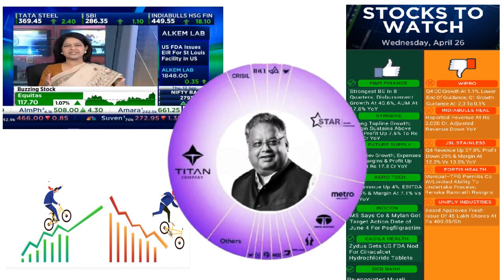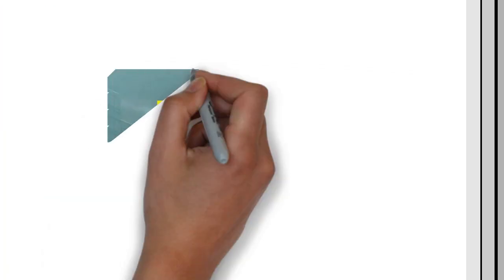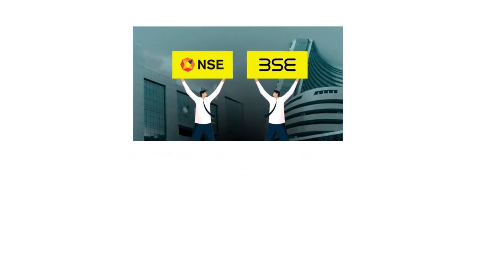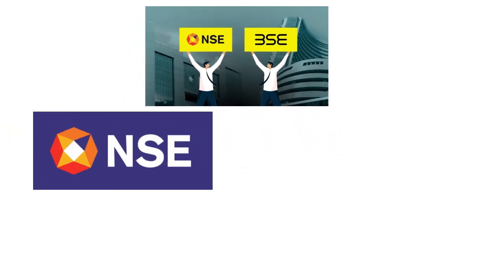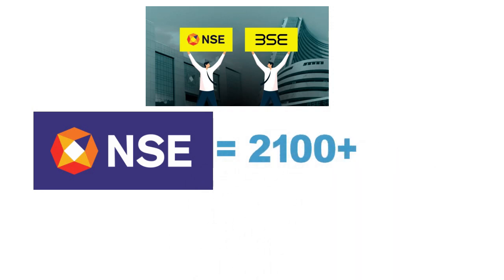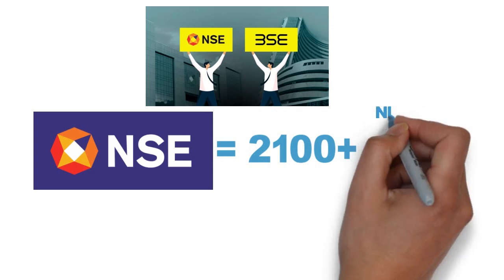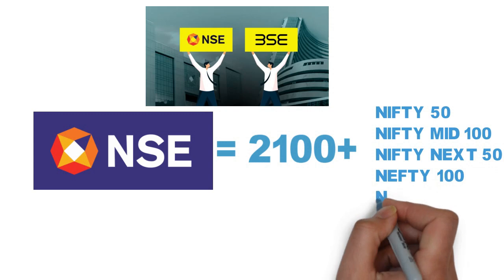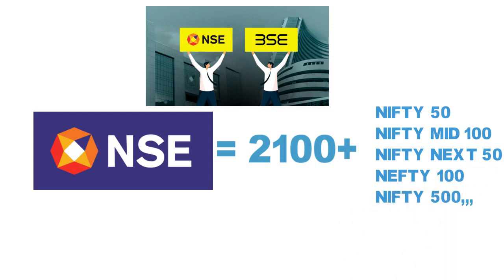Let's see how to select stocks in a systematic way. If you are a serious trader, I am sure you will get good information in this video. In Indian markets we have two exchanges — NSE and BSE. We mainly trade in NSE only. In NSE there are more than 2100 stocks listed, and these are divided by category and index — like Nifty 50, Nifty Midcap 100, Nifty Next 50, Nifty 100, Nifty 500, and so on.